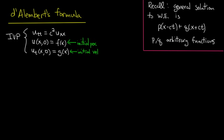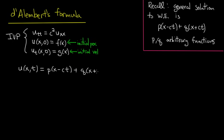What we'll do now is something similar to what we do in ordinary differential equations when we have a general solution and want to satisfy an initial value problem. We take the general solution and plug in the initial values to figure out which specific solution we have. So we will find p and q by using the fact that we must satisfy these initial conditions. Our general solution is u of x, t equals p of x minus ct plus q of x plus ct.